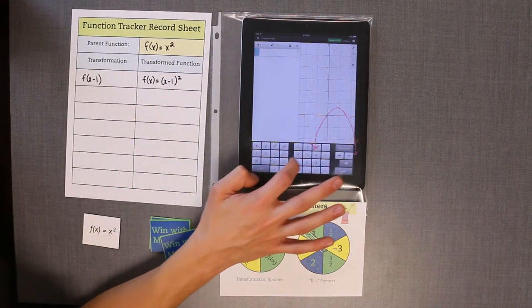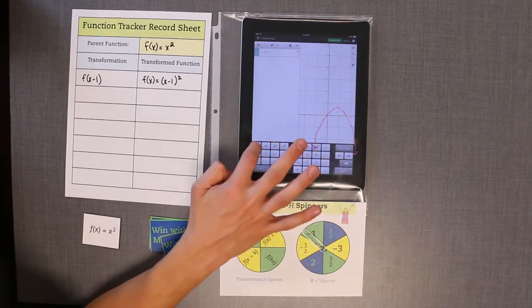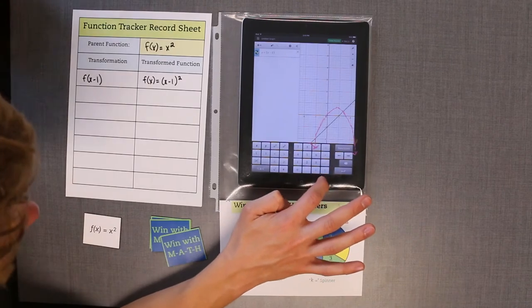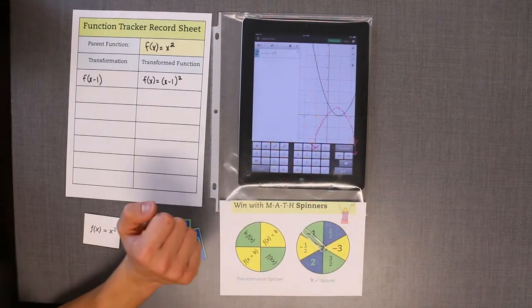Finally, enter the transformed function into the electronic graphing tool. If your hand-drawn graph matches the electronically transformed graph, you earn a letter. If your graph does not match, your turn ends.